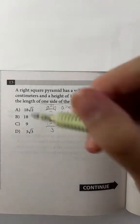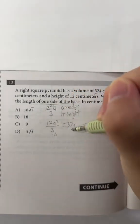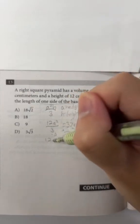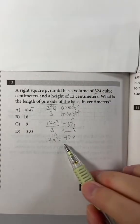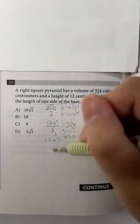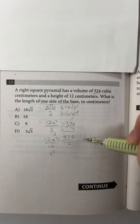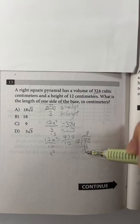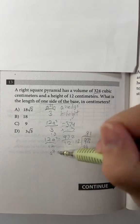So first, let's get rid of the 3 by multiplying it on both sides, and that will give us 12a squared equals 972. And now let's divide by 12, and that will give us a squared equals 81.